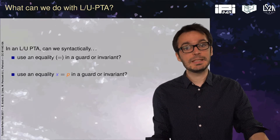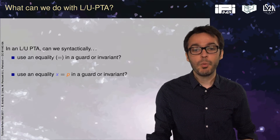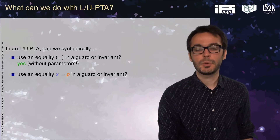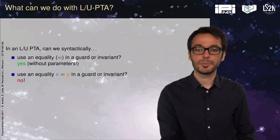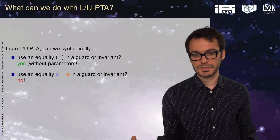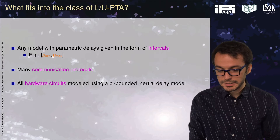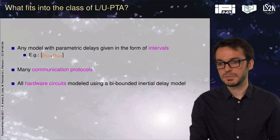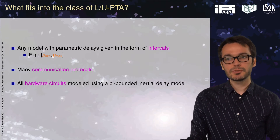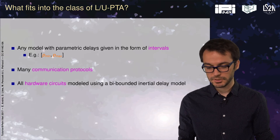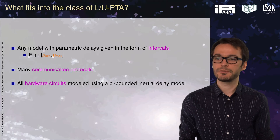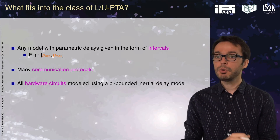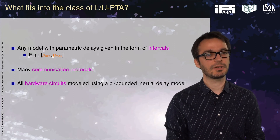Can we syntactically use an equality in a guard or invariant of an LUPTA? Yes, as long as we don't use parameters, because using x equals p in a guard would make p both an upper bound and lower bound parameter. In fact, the class of LUPTA is fairly large: any model with parametric delays in the form of intervals — e.g., a delay between pmin and pmax — translates into an LUPTA. Many communication protocols and all hardware circuits modeled using a bi-bounded inertial delay model fit this class. Notably, in the seminal paper on parametric timed automata by Alur and Courcoubetis, all examples shown were actually LUPTA, although the class was not yet identified.